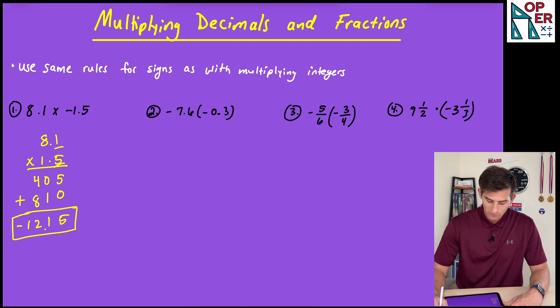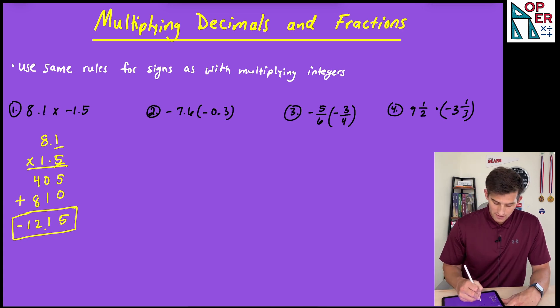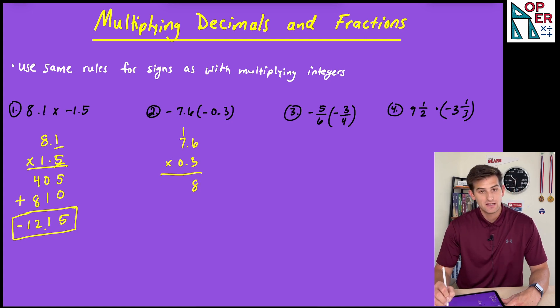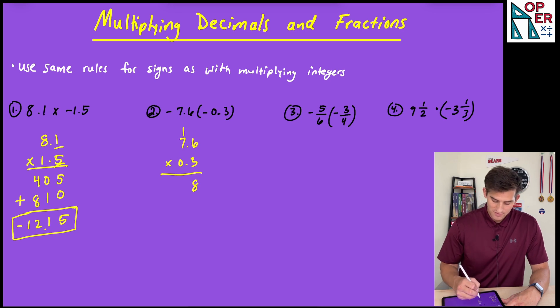All right. Number two, we have negative 7.6 times negative 0.3. So two negatives now, so our answer should be positive. So we're going to write this as 7.6 times 0.3. And 3 times 6 would be 18, so I put my 8 down here and I carry my 1. 3 times 7 would be 21, and I add my 1, which would be 22.